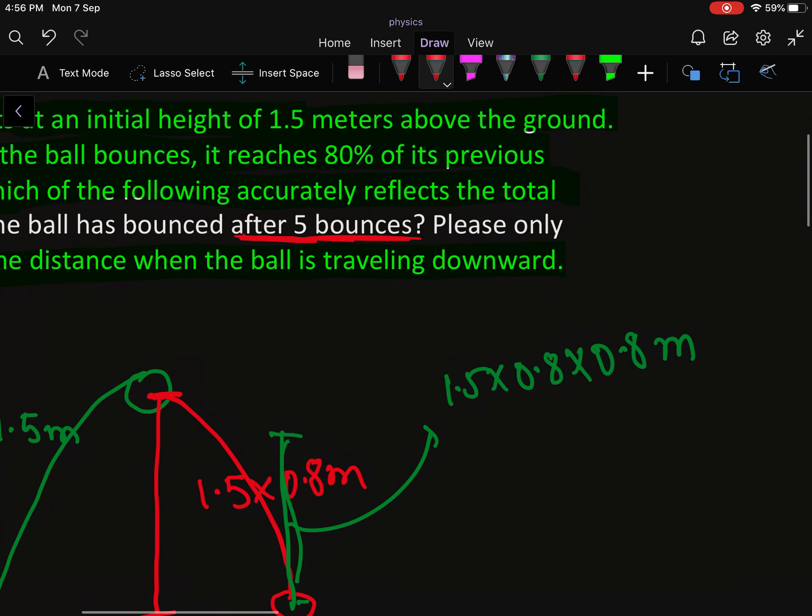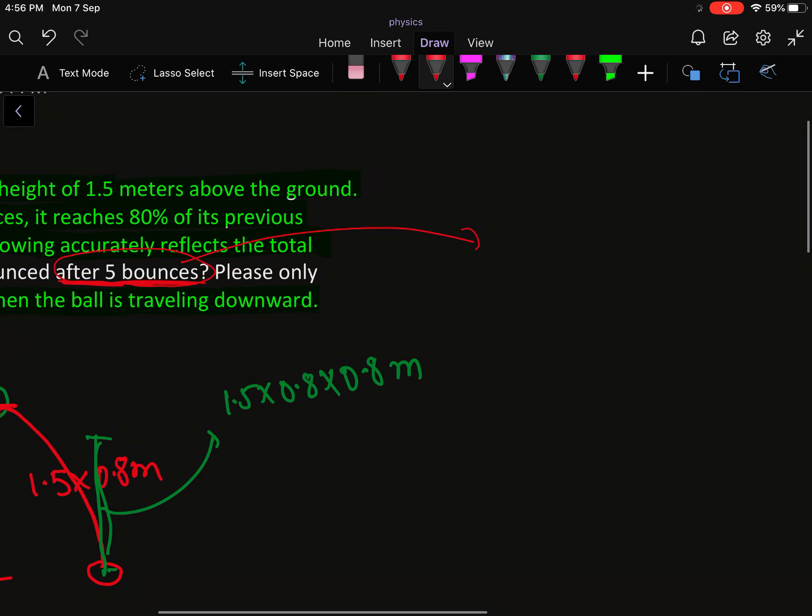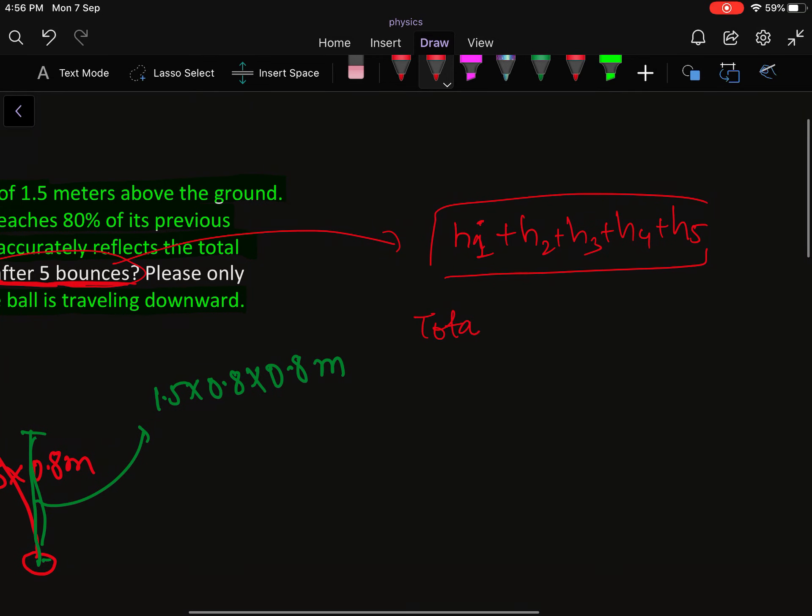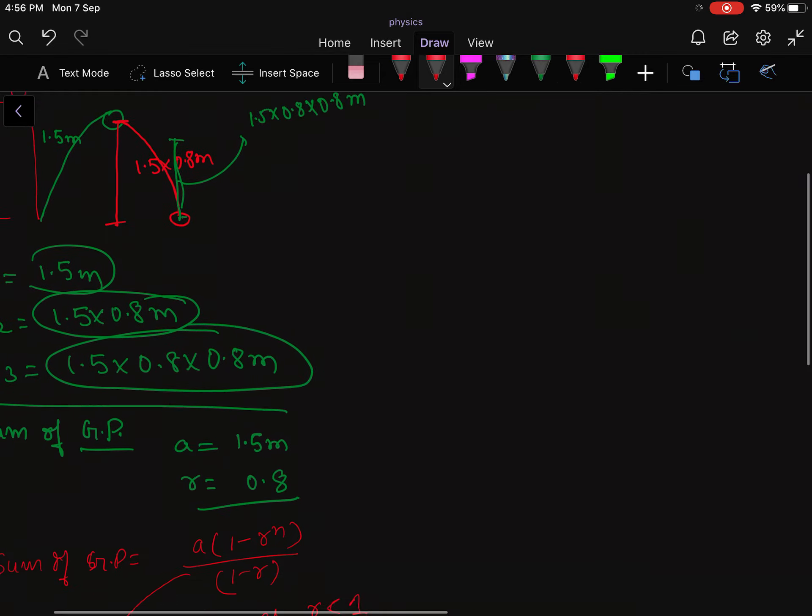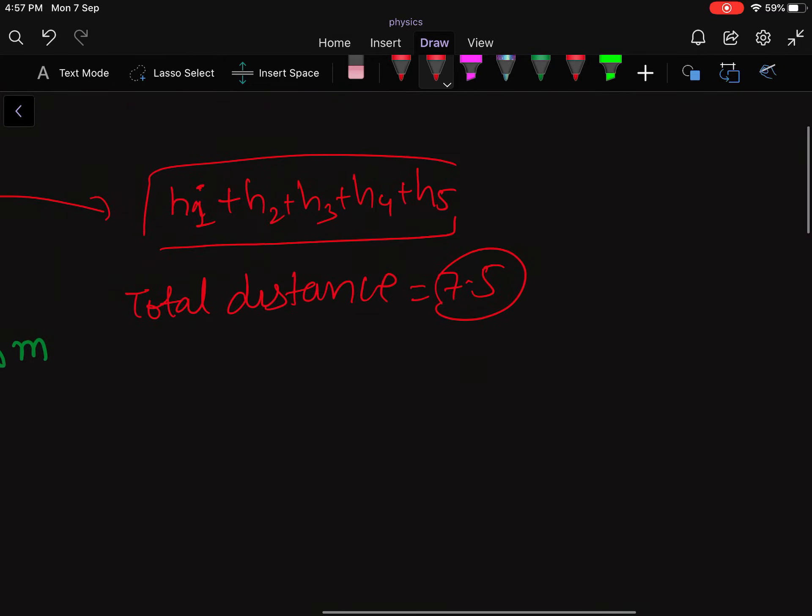But they are asking the distance only after 5 bounces. So you have to also calculate the distance traveled by the ball till 5 bounces. Till the first bounce it is h1, so till 5 bounces it will be h1, h2, h3, h4, and h5. And you know the total distance till it stops is 7.5 meters, which we found using the sum of GP. So you have to just subtract it.